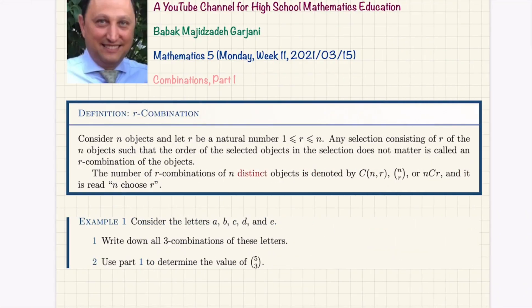Now let us go to the new lesson: combination. Probably you realize from the word combination that this is the first time order doesn't matter for us. What is important is the combination of elements in my group. An r-combination of n objects means: consider n objects, let r be a natural number between 1 and n inclusive, and any selection of r of the n objects such that the order of the selected objects does not matter is called an r-combination.